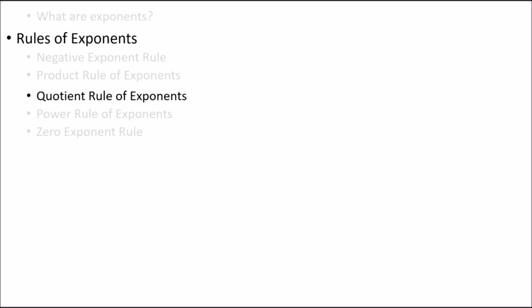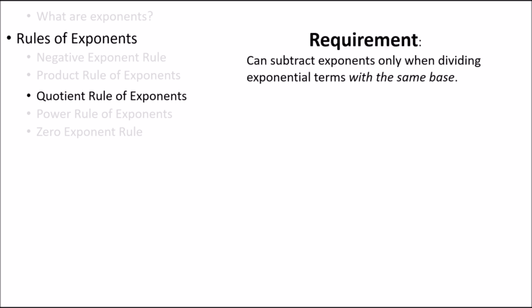The next rule of exponents is called the quotient rule of exponents. As the word quotient implies, this rule will be used when we need to simplify exponential terms that are divided. Similar to the product rule of exponents, the quotient rule can only be used when we have a fraction with exponential terms with the same base in the numerator and denominator. Here we can use the quotient rule because the numerator and denominator both have a base of 2. The quotient rule of exponents tells us to subtract the exponent on the bottom from the exponent on top. So 2 to the 7 divided by 2 to the 4 equals 2 to the 7 minus 4, or 2 to the 3.